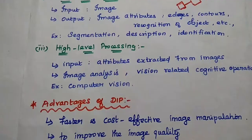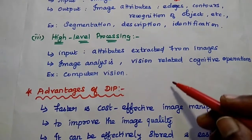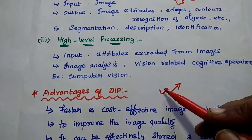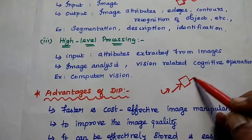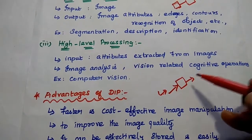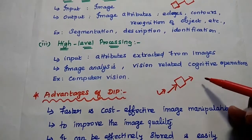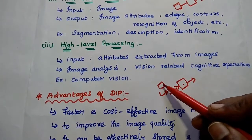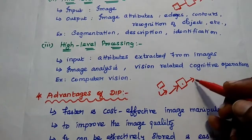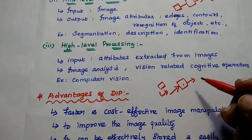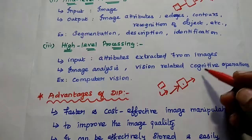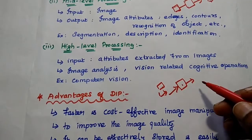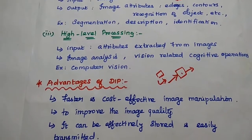Next, high level processing. Here we give the input as the attributes extracted from the image — selected edges or selected objects are given to the system for analysis. For example, computer vision, image analysis, and vision-related cognitive operations. We can give the texture or features of that image to the system, and the system can tell what kind of object it is and what it is performing. These cognitive-related operations are done at high level processing, which is used in computer vision and artificial intelligence technologies.